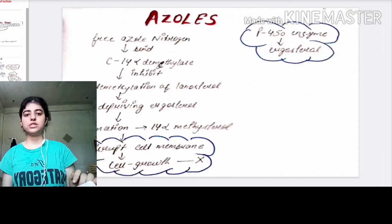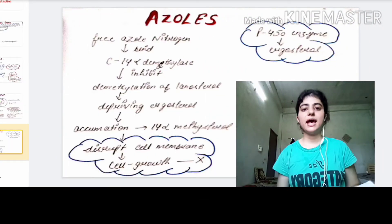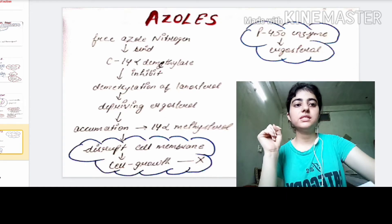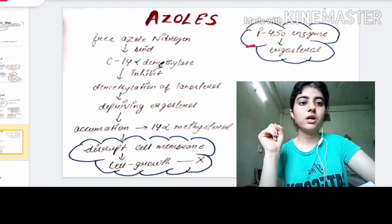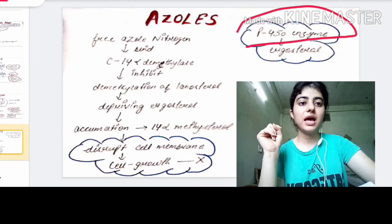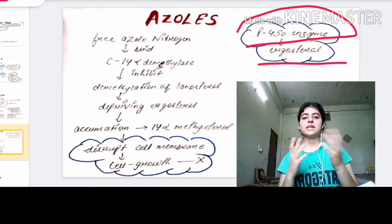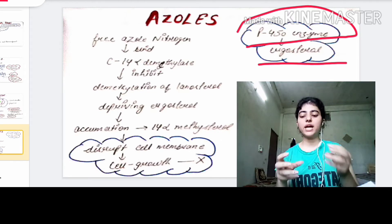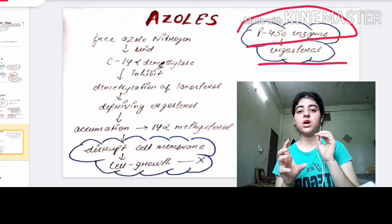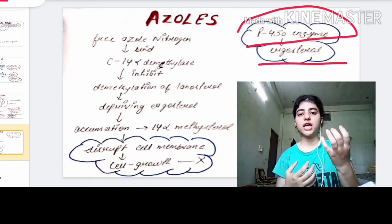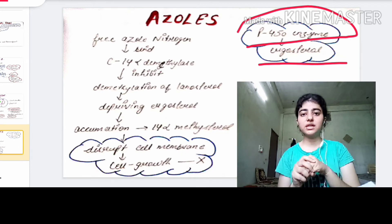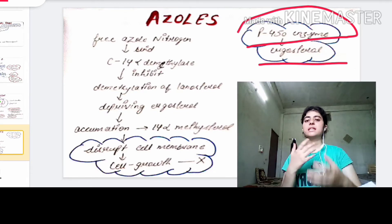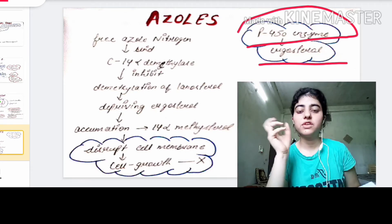Next we have azoles, another important antifungal drug. Azole inhibits the synthesis of ergosterol. Ergosterol is the main component of the fungal cell membrane, defining its shape and structure. If we inhibit ergosterol synthesis, there will be no shape and no structure, and hence the fungal cell will be damaged.